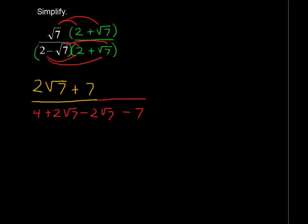I wrote that in red because I know I'm going to be simplifying that more. So this is what I'm talking about. This is going to cancel out right here, this positive 2 square roots of 7 and negative 2 square roots of 7. So we'll have at the end 4 minus 7, so that's negative 3.